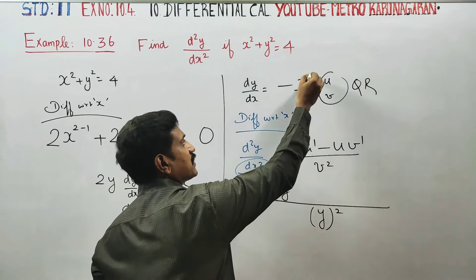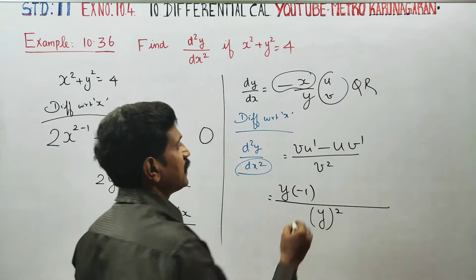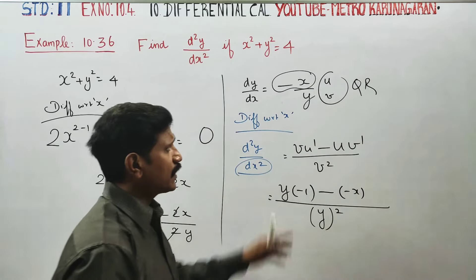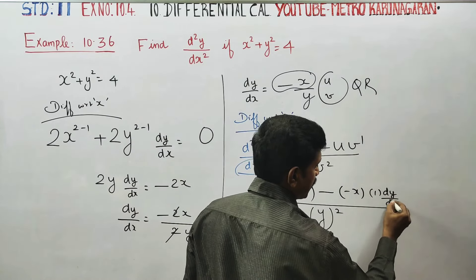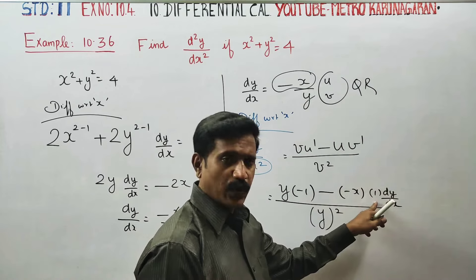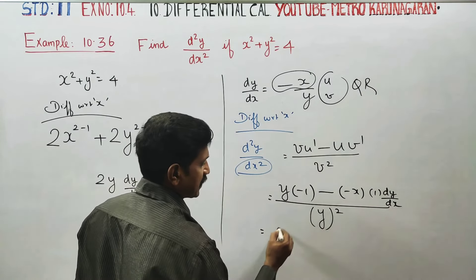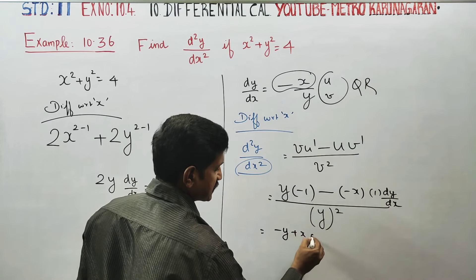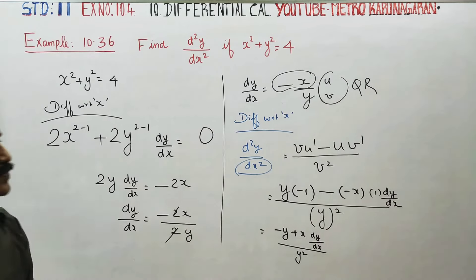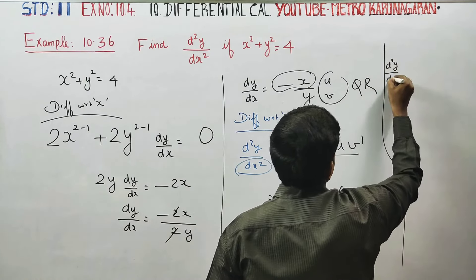Here u = -x and v = y. Differentiating u: -x differentiated gives -1. Differentiating v: y differentiated with respect to x gives dy/dx. So d²y/dx² equals [y·(-1) - (-x)·(dy/dx)] all divided by y².